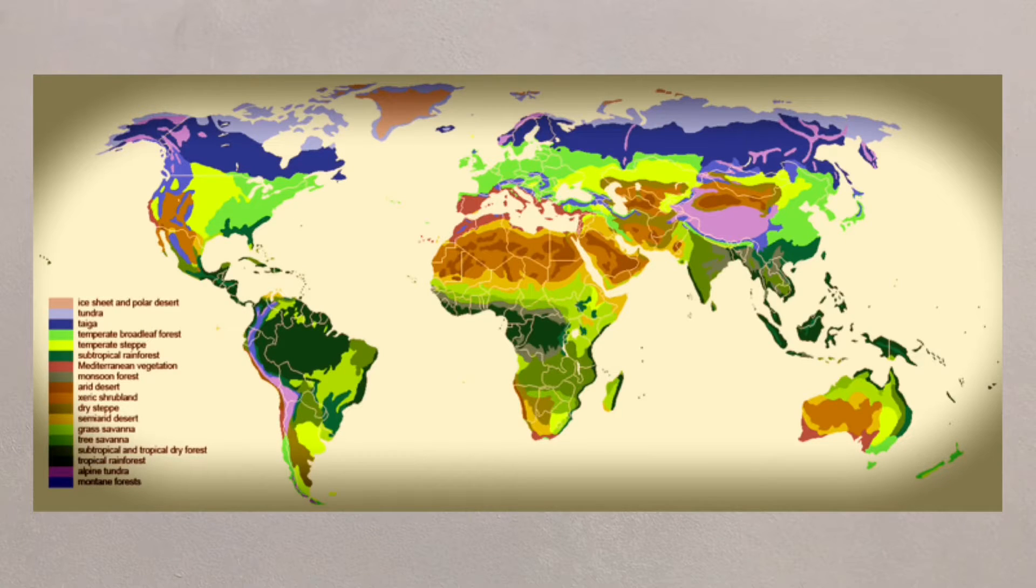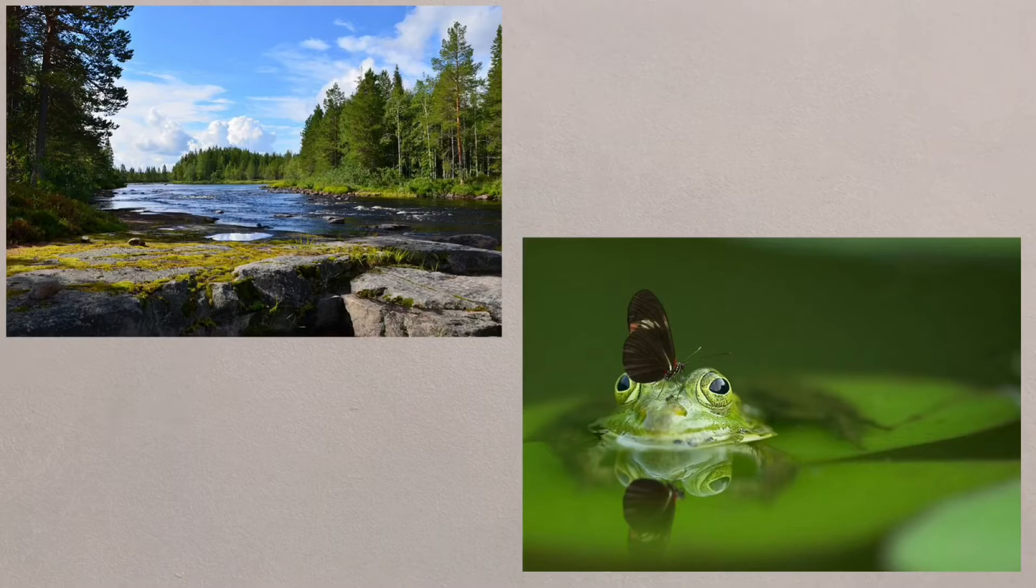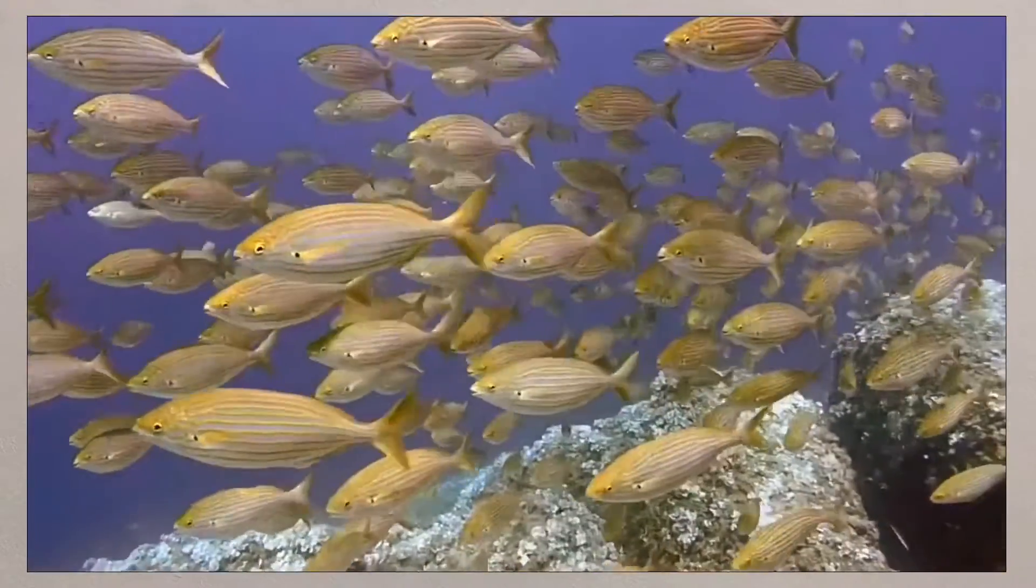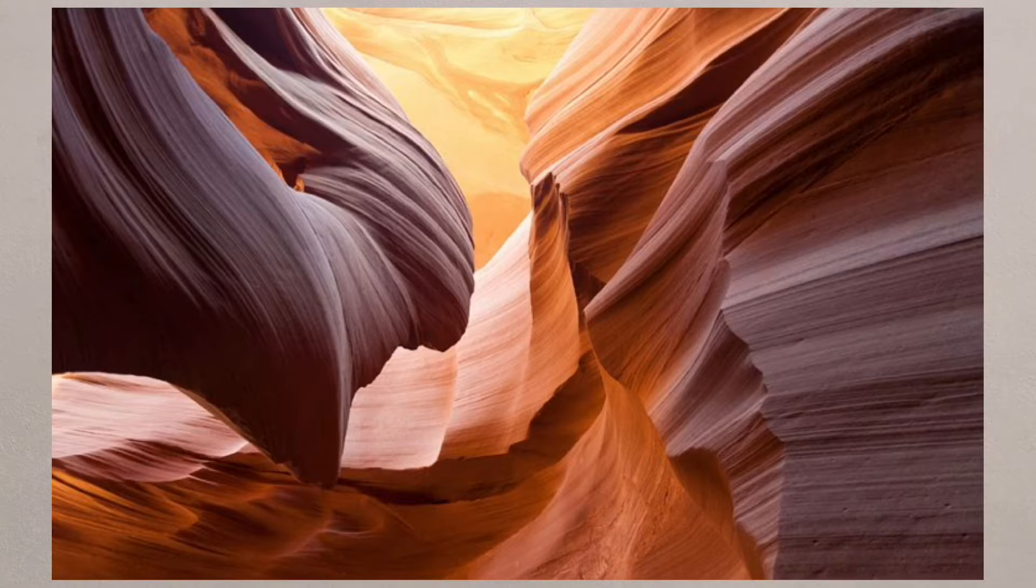Ecosystems are all around us, from the largest biome to the smallest pond. They involve the relationship between the biotic, or living things, and the abiotic, or non-living things.